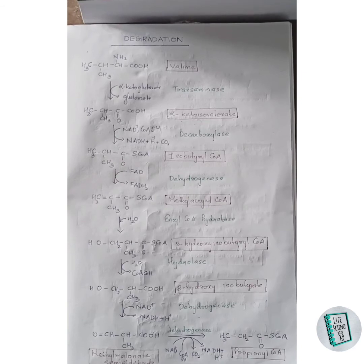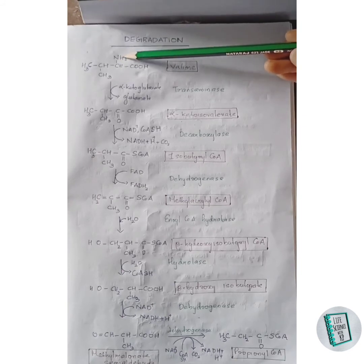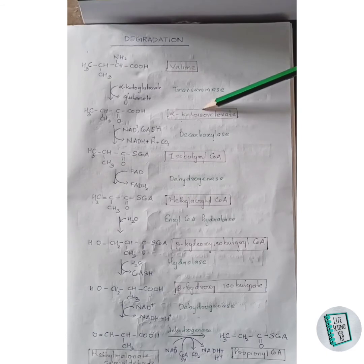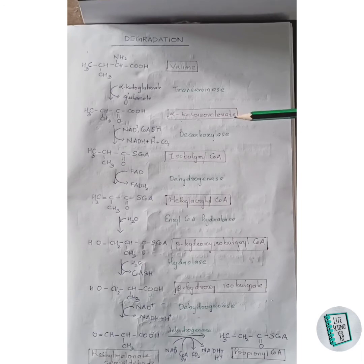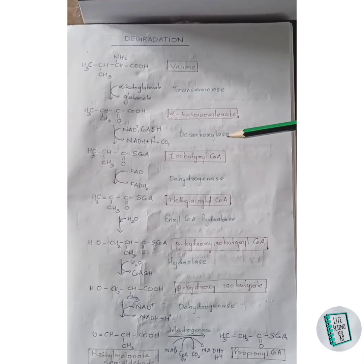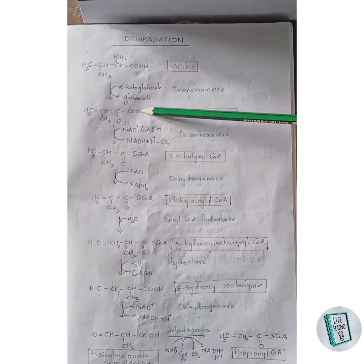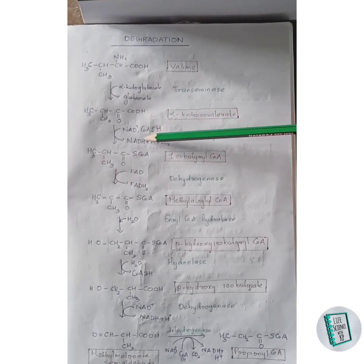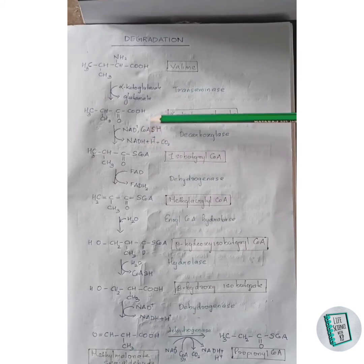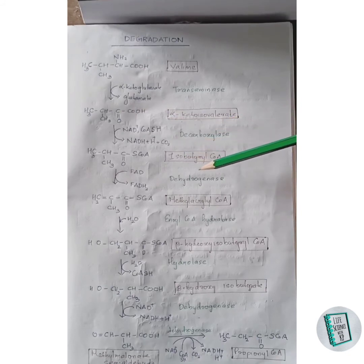Valine degradation starts with a transamination reaction in the presence of transaminase enzyme: the NH2 group of valine is removed and a keto group attaches, forming alpha-keto isovalerate. In the next reaction, alpha-keto isovalerate undergoes decarboxylation in the presence of decarboxylase enzyme to form isobutyryl-CoA. NAD+ acts as a coenzyme and CoA-SH is also present. The COOH group is removed as CO2, hydrogens are removed as NADH2, and the S-CoA attaches to this carbon to form isobutyryl-CoA.